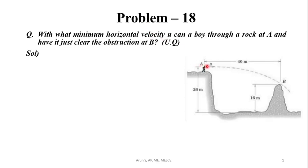The obstruction is just cleared at point B. Since we are throwing with horizontal velocity U, the vertical component of the velocity is zero. The vertical direction movement is affected by the acceleration due to gravity. Due to that effect, instead of going in a straight path, the rock traces a curved path and the point B obstruction is just cleared. The net vertical distance covered by the rock will be equal to 26 minus 16, that is 10 meters.